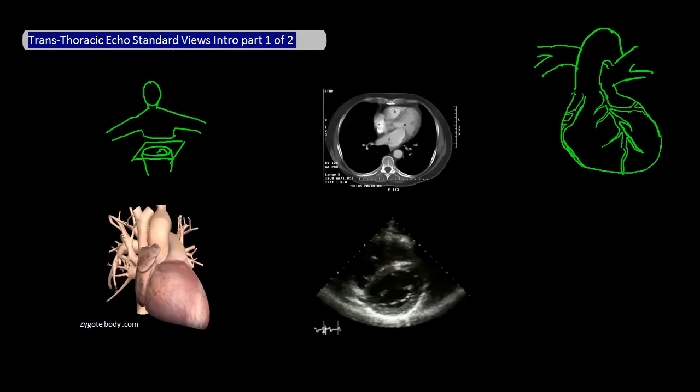Similar to how CT scans are made through multiple cuts through the human body, a TTE evaluates multiple cuts of the heart at different positions using different angles.